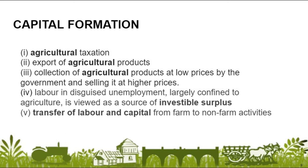In India, the government sells agricultural products at lower prices to the people through food distribution in ration shops, so that people who cannot afford it are able to buy and have sufficient access to food grains. The government also maintains buffer stock of agricultural goods to help with food security during times of shortage. There is also labor and disguised unemployment in the agricultural sector, meaning more people are employed in agriculture than actually required, and the marginal productivity of an additional unit of labor is zero or negative. This surplus human capital can be transferred from farm to non-farm activities.